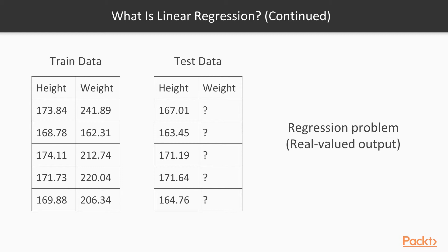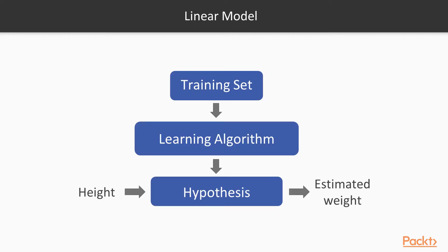This type of problem is called a regression problem. A way to understand a regression problem is that it always has real valued output. You have the training set, pass it to the learning algorithm and it gives out a hypothesis function, which when supplied a new height predicts a certain weight. So our task is to learn this hypothesis function.